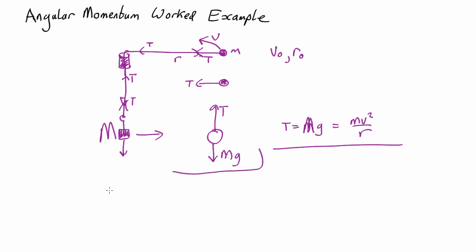So we can use angular momentum, which is going to be conserved. Angular momentum is m v r. So when it starts, that's going to be m v0 r0, but it's always going to be the same.